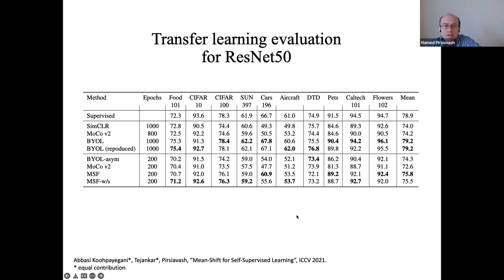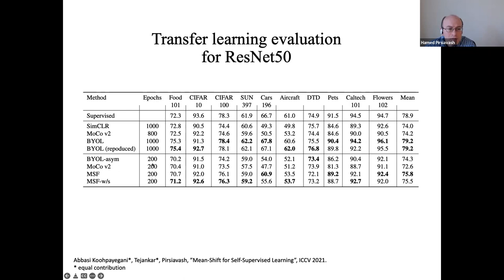We also evaluated transfer learning: train on ImageNet and transfer to other datasets like Food, CIFAR, Cars, Aircraft, etc. MSF trained for 200 epochs achieves around 75% average accuracy across tasks, compared to BYOL at around 75% — a slight improvement. For reference, supervised models get around 78%, showing that SSL is approaching supervised performance on downstream transfer tasks as well.